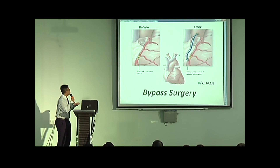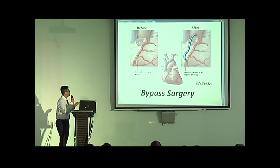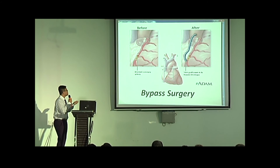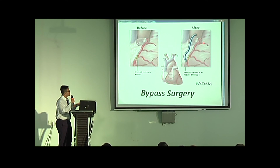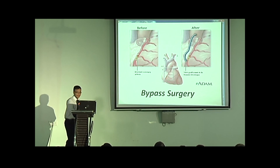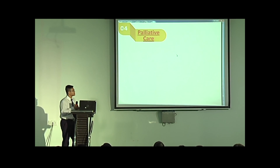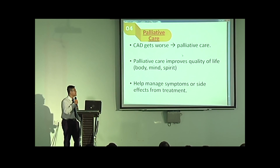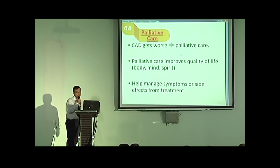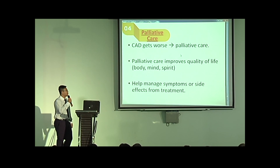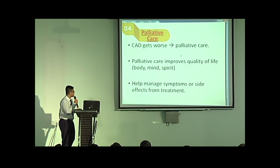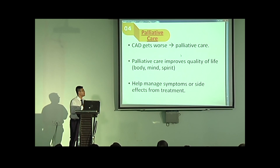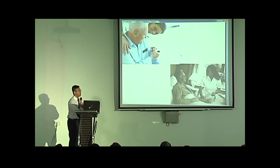This is the image of a blocked coronary artery. The coronary artery has an obstruction inside it. To bypass this obstruction, we create another pathway for blood flow using a graft technique — the blue represents the graft. The last part is palliative care. If your coronary artery disease gets worse, you might think about palliative care, focusing on improving quality of life — not just in your body, but also in your mind. It might help you manage side effects from treatment. This concludes our presentation. Thank you.